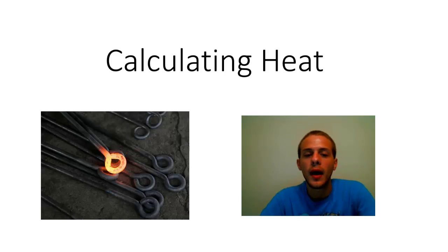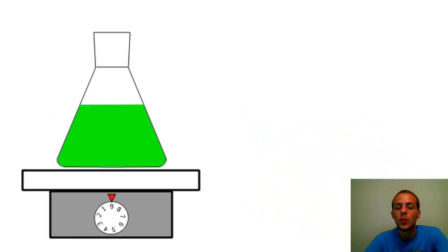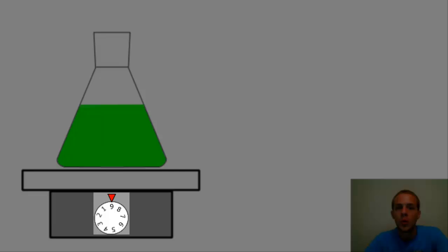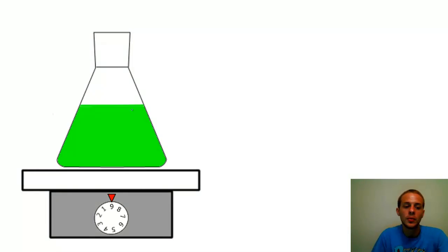So to show you guys how to calculate heat, imagine that we have this scenario where we have an Erlenmeyer flask containing this green liquid and the flask is sitting on top of a hot plate. Notice that the hot plate is turned all the way up to 9. So as this hot plate gets really hot, this white surface is going to heat up and that's going to act as a source of heat. So heat is going to flow into this green liquid.